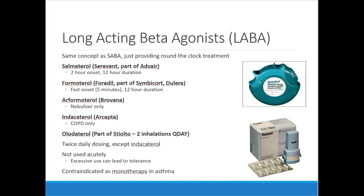Long-acting beta agonists are the same as short-acting but last longer — about 12 hours, usually dosed twice daily for most products. Combination therapy is very popular for asthma and COPD, mostly combining long-acting beta agonists with some sort of inhaled corticosteroid.